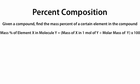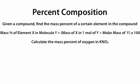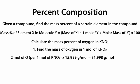Let's look at an example of how we use this equation. Calculate the mass percent of oxygen in KNO₂. Step 1: find the mass of oxygen in one mole of KNO₂. Since there are two moles of oxygen per one mole of KNO₂, we multiply 2 moles of oxygen by 15.999 grams per mole, which gives us 31.998 grams of oxygen per mole of KNO₂.